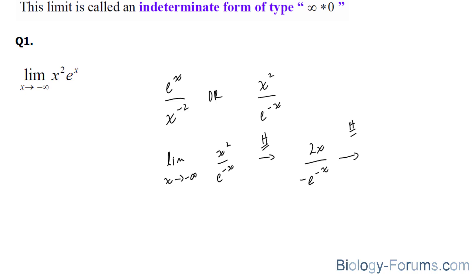Every time I apply it, I'll write down h. So the derivative of 2x is equal to 2, and the derivative of negative e to the power of negative x is equal to e to the power of negative x.